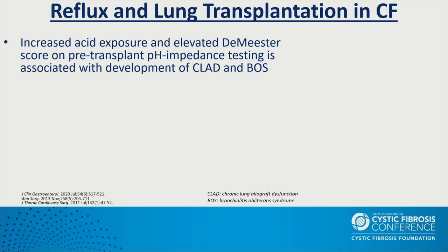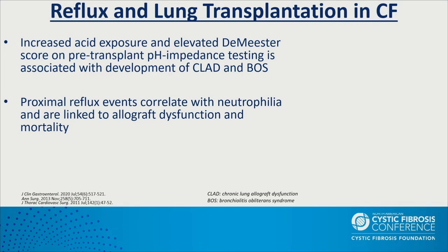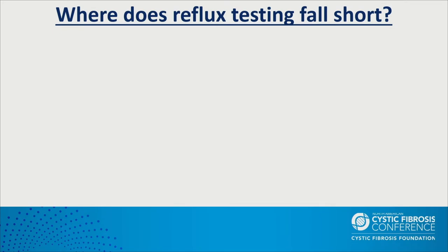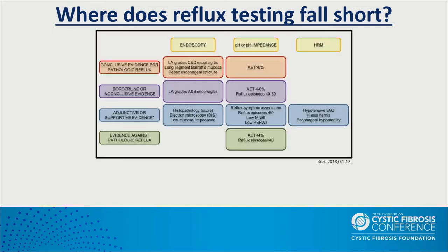In the lung transplant literature, increased acid exposure in the esophagus and elevated DEMIS scores in pre-transplant reflux testing are associated with development of chronic lung allograft dysfunction and bronchiolitis obliterans syndrome. Proximal reflux correlates with airway inflammation and is linked to allograft dysfunction and mortality. Patients with pre-transplant reflux show a rapid decrease in lung function after transplant and increased mortality. This raises the question: where does our current reflux testing fall short? We are measuring reflux from an esophagus standpoint, not from a lung standpoint.